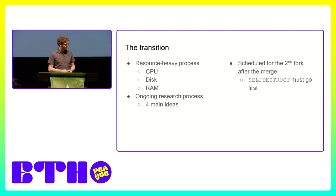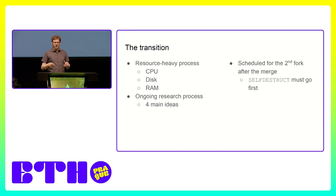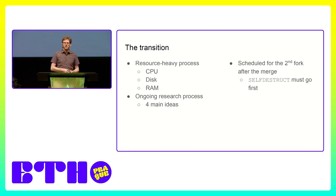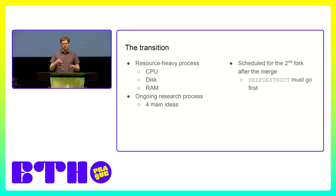Let's talk about the transition. The problem is that you have a very large data structure using one proof format and you need to convert it to a different format. On top of that, the new format is a bit more CPU-intensive. It's not scheduled for right after the merge — there's going to be an intermediate fork in between, because we need to remove self-destruct. The reason is that we no longer differentiate between accounts and storage, so you can't really know what storage an account has and therefore can't really destroy accounts anymore.